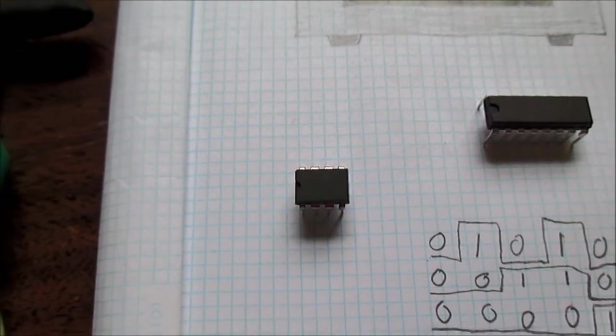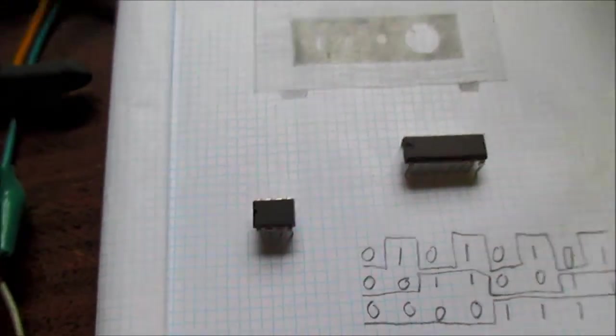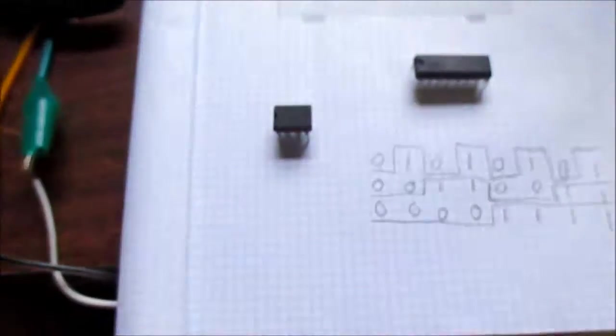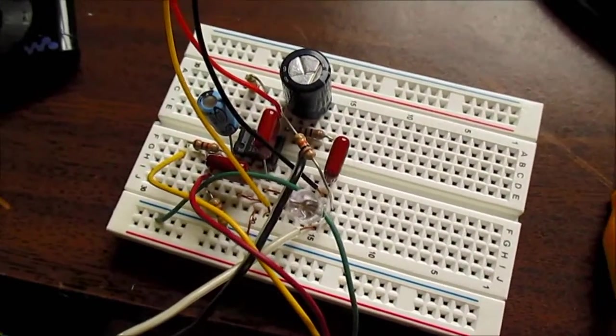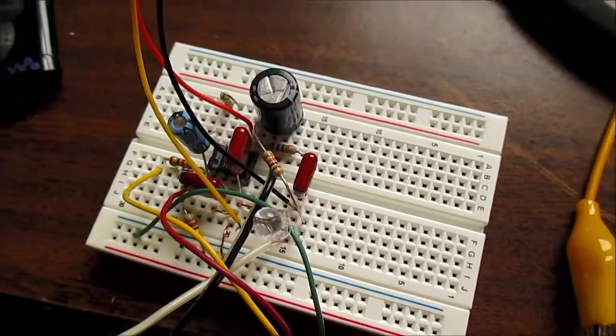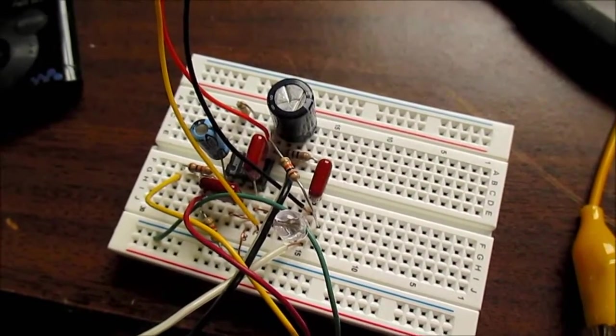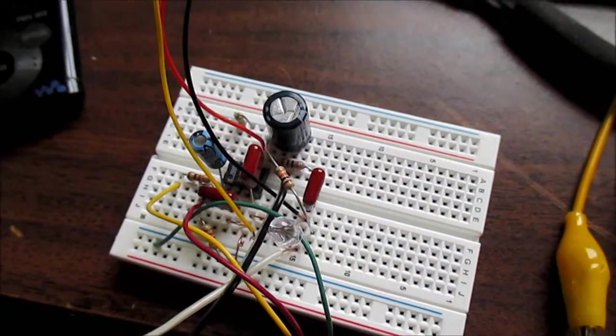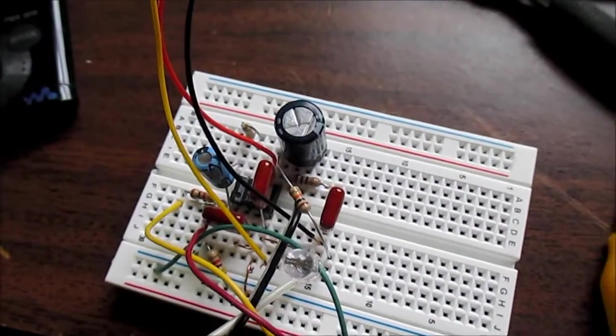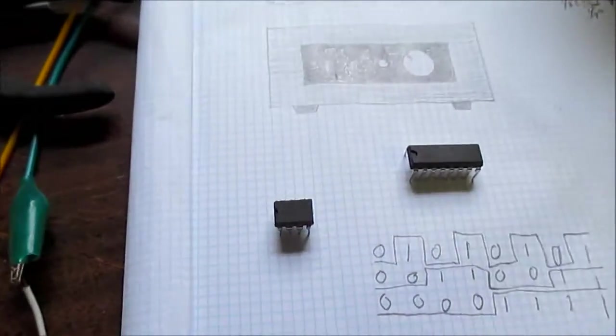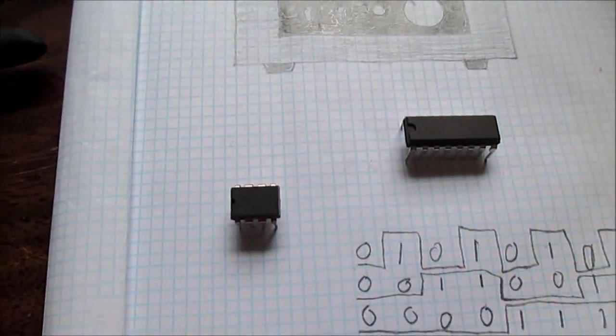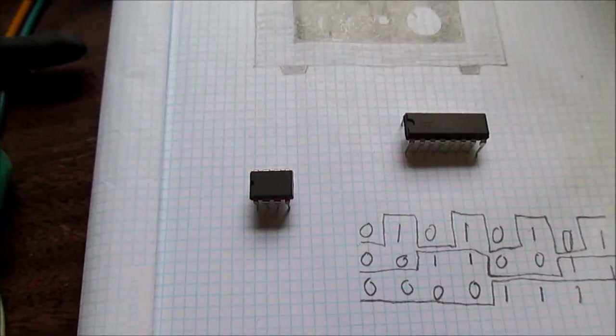LM386, you hook it up to 4 ohm loads and the output kind of collapses. It doesn't really increase much when you hook up a 4 ohm load, where it should be quite a bit of increase in output power.